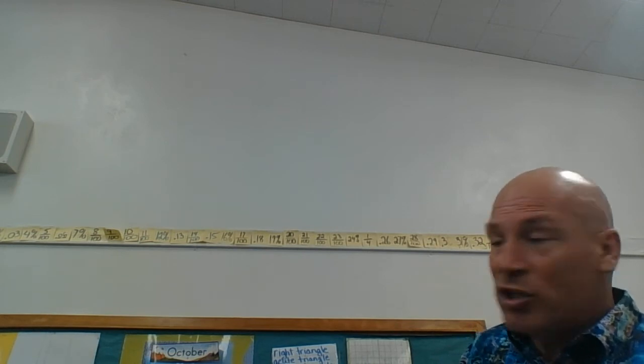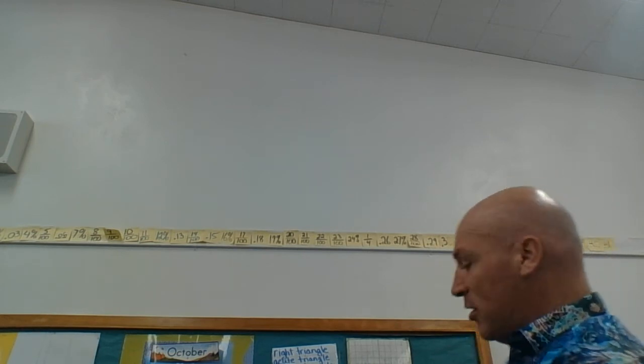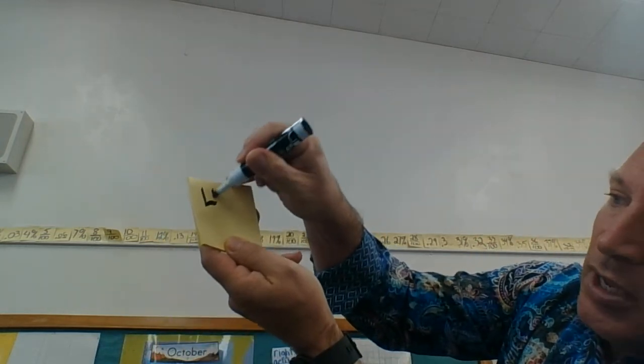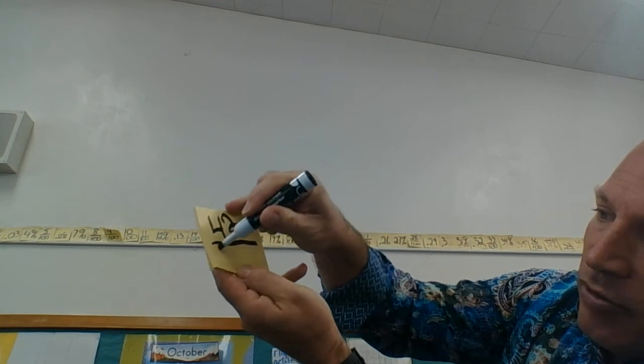We can write it as a decimal, 42 hundredths, or we can write it as a fraction, 42 hundredths. Let's write it as a fraction. So we're going to write it as 42 hundredths.